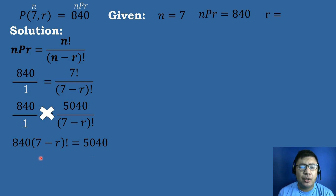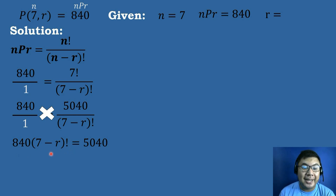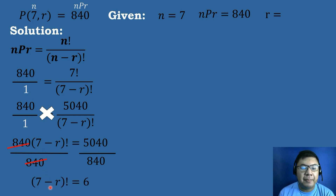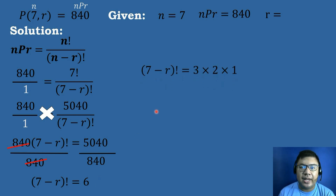We divide both sides by 840. The 840 cancels out on both the numerator and denominator. So the quantity 7 minus R factorial equals 5,040 divided by 840, which is equal to 6. We then copy the quantity 7 minus R factorial equals 6, and we will transform 6 into factorial form.